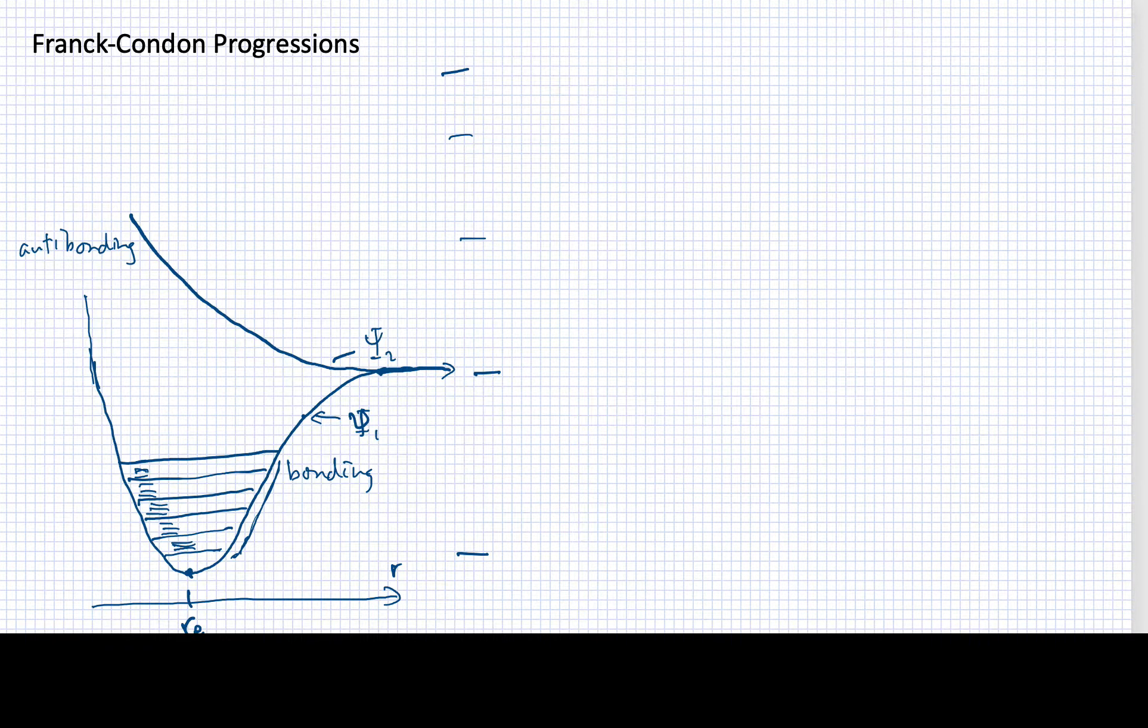What I want to spend most of my time in this video talking about is what happens during an electronic transition. I want to consider what happens when we make an electronic transition to another state that is bound. So let's say we've got a state up here that is a bound state. So now I've got psi 3, as I've drawn them. And this state will have certain vibrational levels up along here and rotational levels inside that.